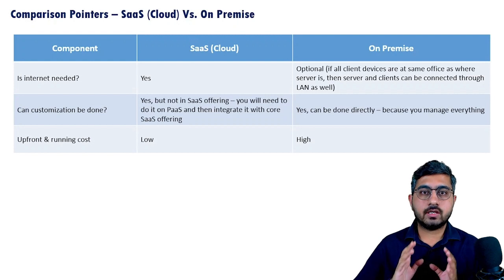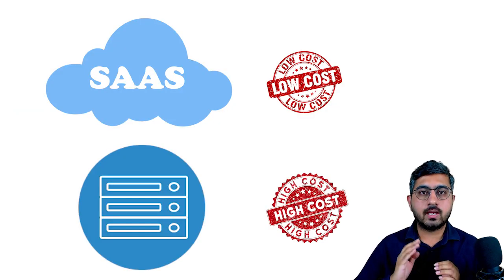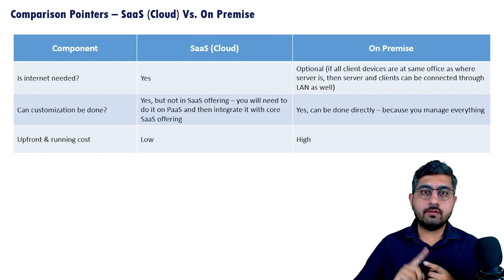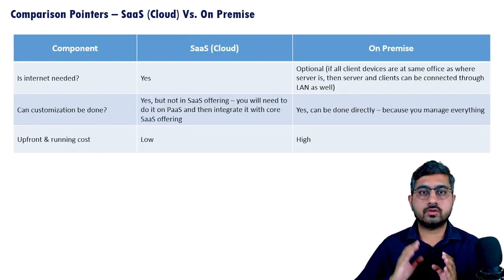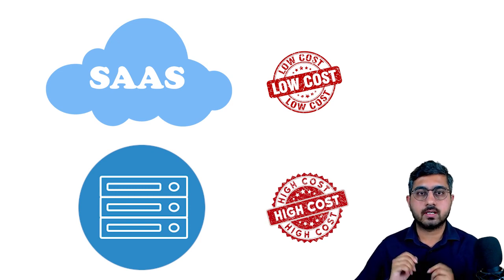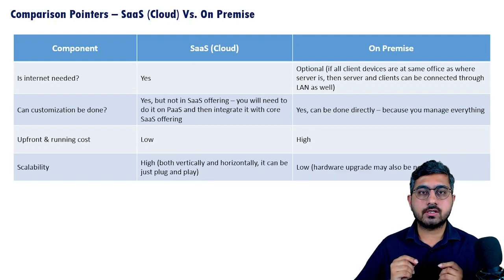The next comparison point is the upfront investment or cost. In case of a SaaS or cloud-based software, the upfront investment is very low compared to on-premise. Even the running cost of SaaS is comparatively cheaper compared to on-premise software.